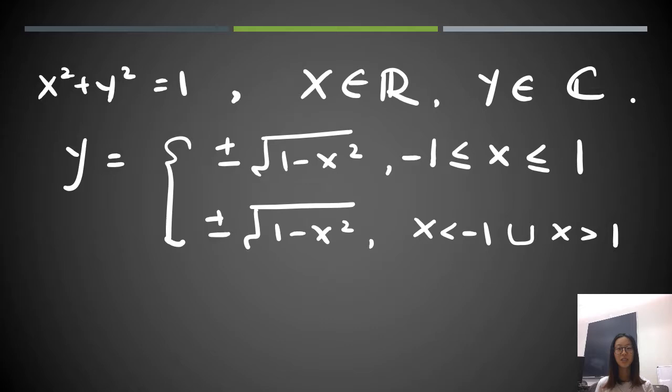However, there is a difference between these two cases. In the first case, 1-x², which is the thing inside the square root, is a positive number or is 0. Therefore, y will be a real number. Whereas in the second case, 1-x² is a negative number. Therefore, y will become purely imaginary. And by writing out this purely imaginary number explicitly, we see that in this case, y is ±√(x²-1)·i, where i is the square root of -1.